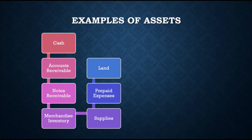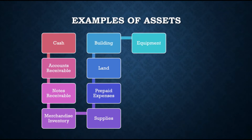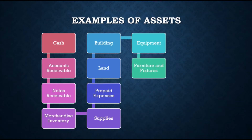Next is land, which is property owned. Then building — structures that have been built. Then office or store equipment, which includes computers, aircon, electric fans, freezers, etc. And also furniture and fixtures, which includes office tables, chairs, filing cabinets, etc.